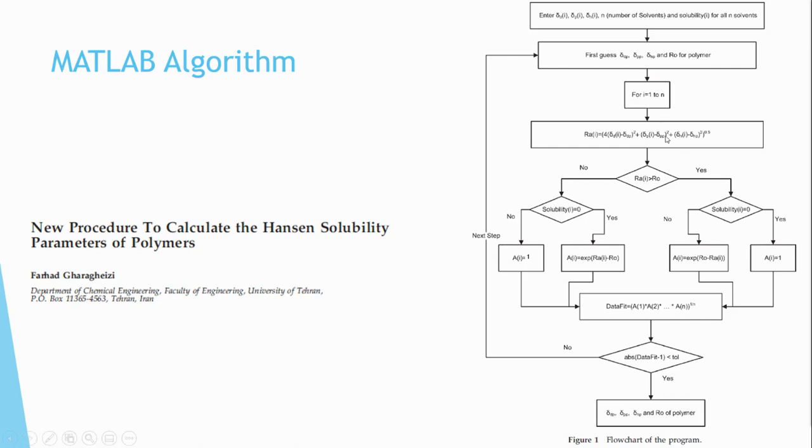If the Ra of a solvent is greater than Ro, or if the red is greater than one, the solubility for that solvent should be zero. If the solvent ranking is indeed zero, then a value of one is outputted here. If the solubility value is not zero, if it's one or two, then a penalty value is created of e to the power of the difference of the Ra and the Ro.